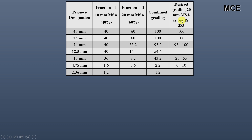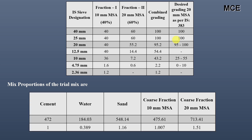The final mix proportions for the trial mix are: cement = 472 kg, water = 184.03 liters, sand = 548.14 kg, coarse fraction 10 mm = 475.61 kg, coarse fraction 20 mm = 713.41 kg. Expressed as ratios by dividing by cement: 1 : 0.389 : 1.16 : 1.007 : 1.51.